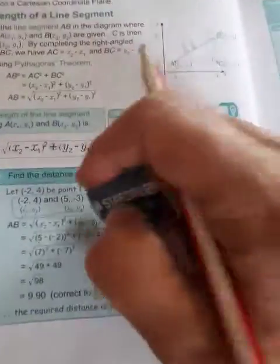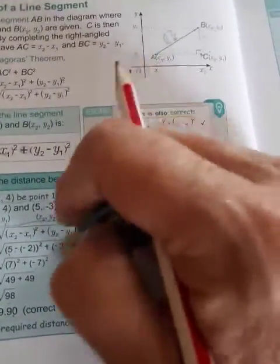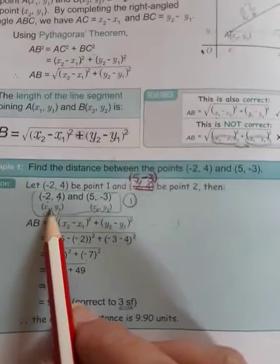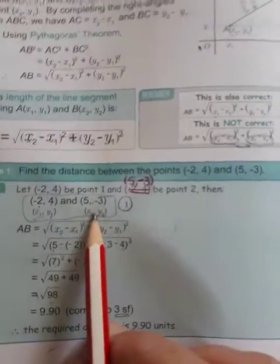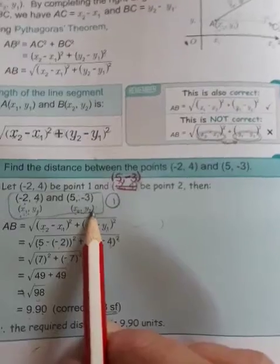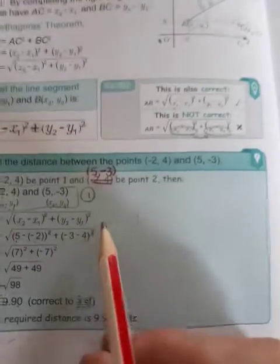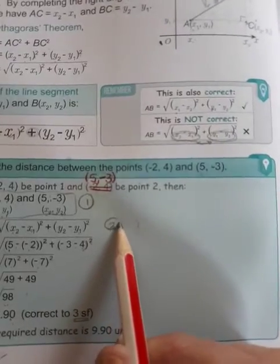So let me just quickly repeat. What are the steps? Number 1 is write down your coordinates and label them as coordinate 1, x1, y1, and as coordinate 2, x2, y2. Please do it like this example here. Then the next step is to write down your formula.